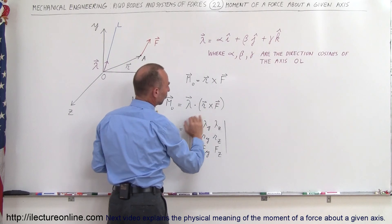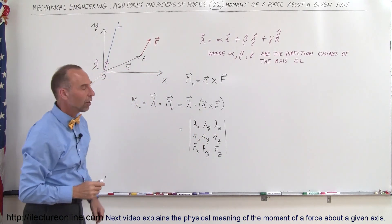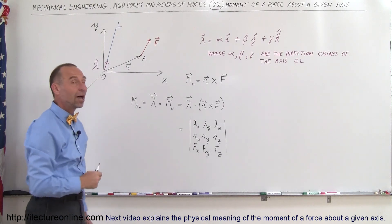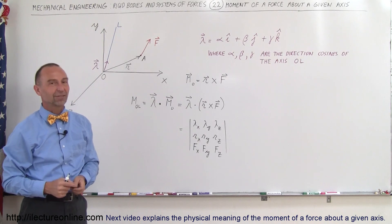Beta and gamma are what we call the direction cosines. Sometimes we write it like this, or sometimes like this, where these are simply the x, y, and z components of the unit vector. And that's how we find the moment about any arbitrary axis that goes through the origin.